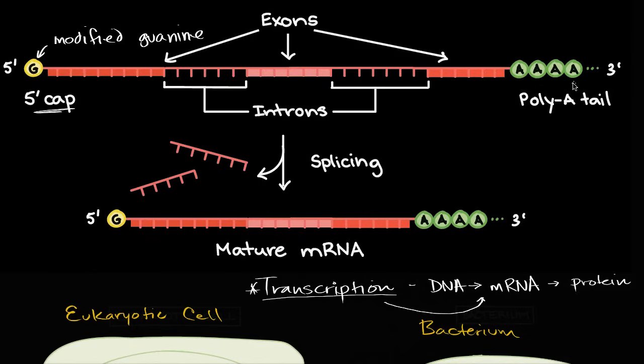And then you have this poly-A tail, and it's called a poly-A tail because it has a bunch of adenines at the end right over here. And these not only help in the translation process, it helps make sure that the information is more robust, that the ends of the mRNA don't in some way become, or it makes it less likely that they're going to become damaged.